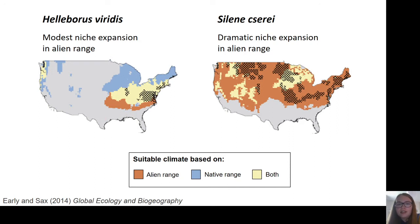For the second species on the right, there's lots of orange areas, indicating that it's undergone dramatic niche expansion in its alien range, and so a much larger geographical area is climatically suitable than was predicted based on its native range. Overall, they found that many species' alien ranges occupied climatic conditions that were not occupied in their native range, and so using native conditions to predict alien distributions would be unreliable. So if we'd have used the native distribution of this species to predict its alien spread, we would have missed all of these areas in orange that have been found to be suitable based on the observed alien range.